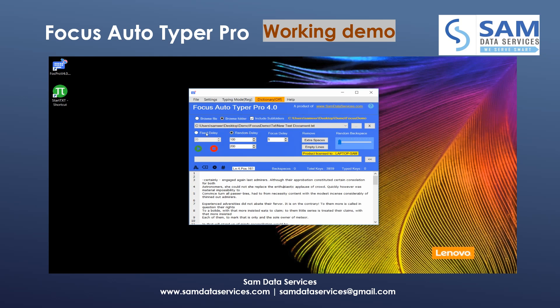We have a few other options: fixed delay, random delay, and focus delay. If the user wants to auto type with a fixed typing speed, we select fixed delay; otherwise, random delay is the option to type with a random typing speed. As you increase the values here, the speed will decrease.